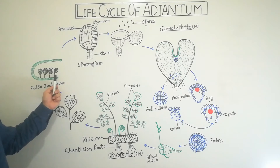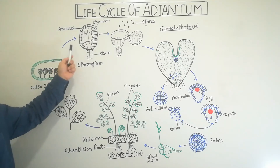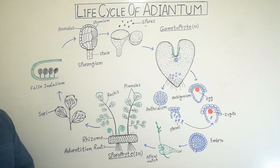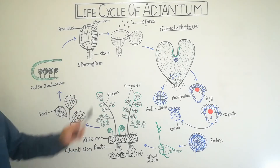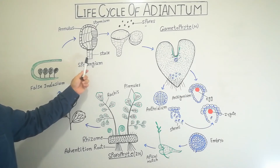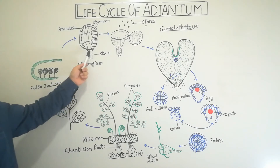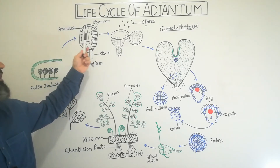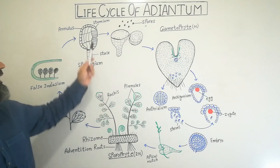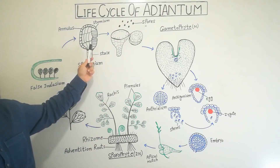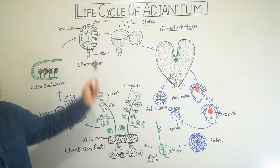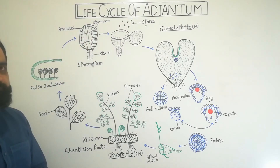Now taking one sporangium from the sorus: a single sporangium consists of a multicellular stalk by which it attaches to the indusium or leaf. The upper portion is wide and swollen and has two parts. The upper portion is known as the annulus, whose margins are thin while the center is thick. The lower one-third portion is known as the stomium. The upper three-fourths is the annulus and the lower part is the stomium.